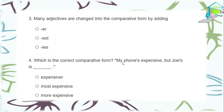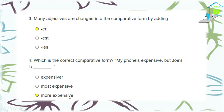Third question: many adjectives are changed into the comparative form by adding -ER, -EST, or -IES. The answer is -ER. Question four: which is the correct comparative form? 'My phone is expensive, but Joe's is ___' — most expensive or more expensive? Pay attention to the adjective 'expensive' — it is a long adjective, not a short one. So the best answer is 'more expensive,' because 'expensive' is a long adjective.